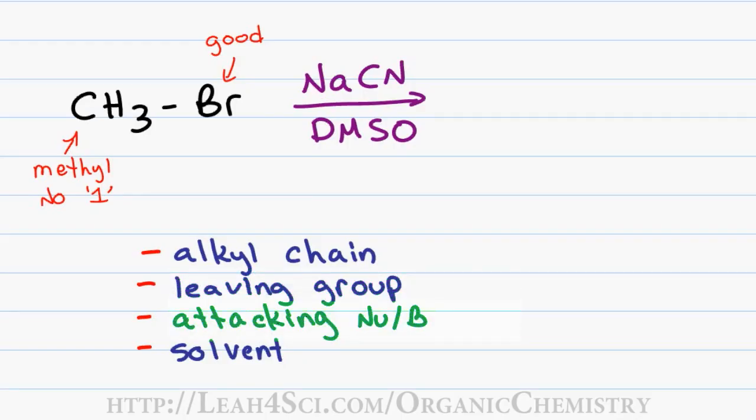Our attacking group is NaCN and while it appears neutral at first glance it's actually charged. We have sodium as a positive spectator ion and CN which has a negative charge. A negative carbon is very reactive and therefore makes a very strong nucleophile giving us a two type reaction where substitution is favored over elimination given that the triple bond on the cyanide is highly polarizable and polarizable negative molecules tend to be good nucleophiles.